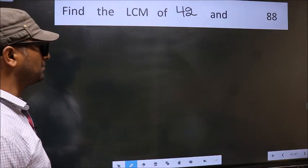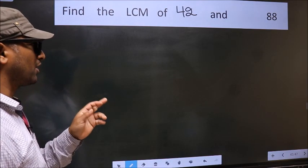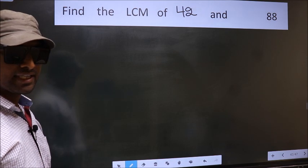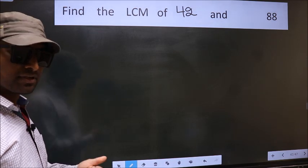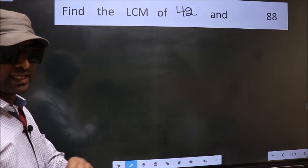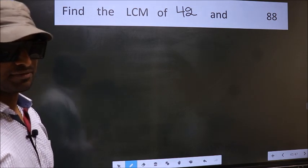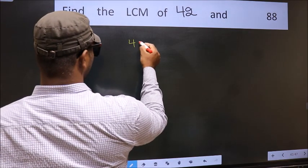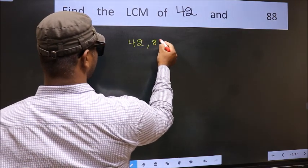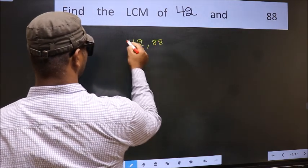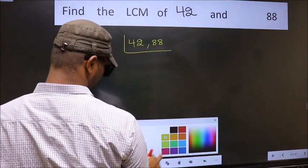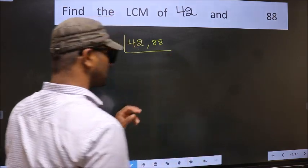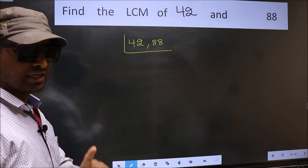Find the LCM of 42 and 88. To find the LCM, first we should frame it in this way: 42, 88. This is your step 1.